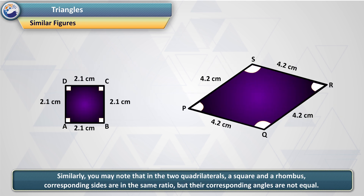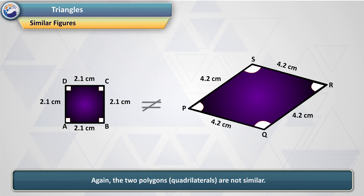Similarly, you may note that in the two quadrilaterals — a square and a rhombus — corresponding sides are in the same ratio, but their corresponding angles are not equal. Again, the two polygons (quadrilaterals) are not similar.